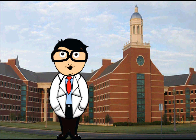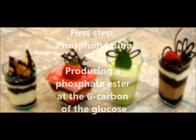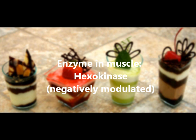Now that we got the background info out of the way, let's continue to the reactions portion. Glucose is first phosphorylated upon entering the cell, producing a phosphate ester at the sixth carbon of the glucose. For muscle cells, the enzyme catalyzing this phosphate transfer from ATP is hexokinase. Hexokinase is an allosteric enzyme that is negatively modulated by the product of the reaction, glucose 6-phosphate. That means when the muscle cell has enough glucose 6-phosphate, additional glucose is phosphorylated at a slower rate.